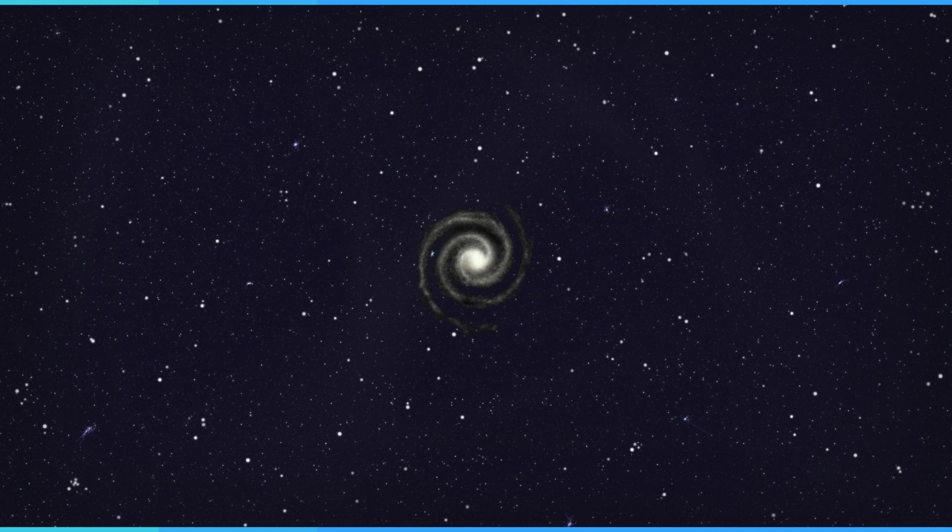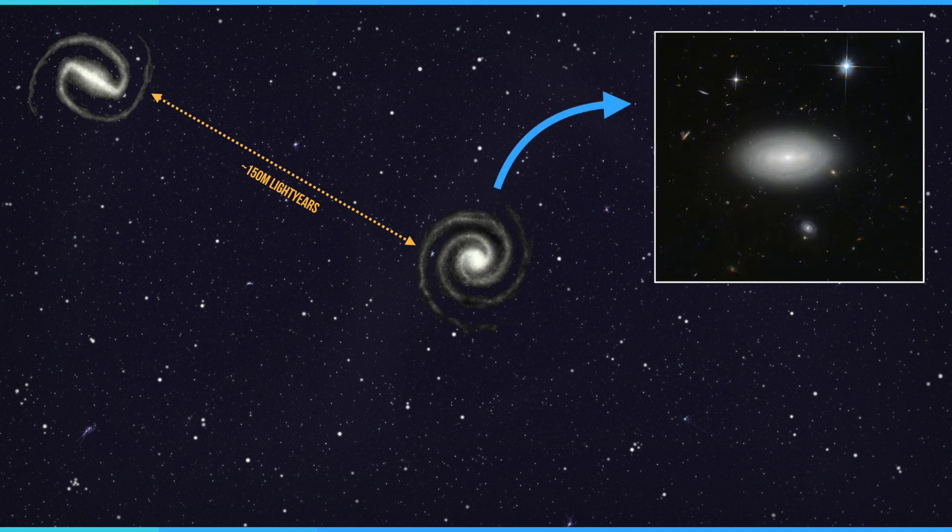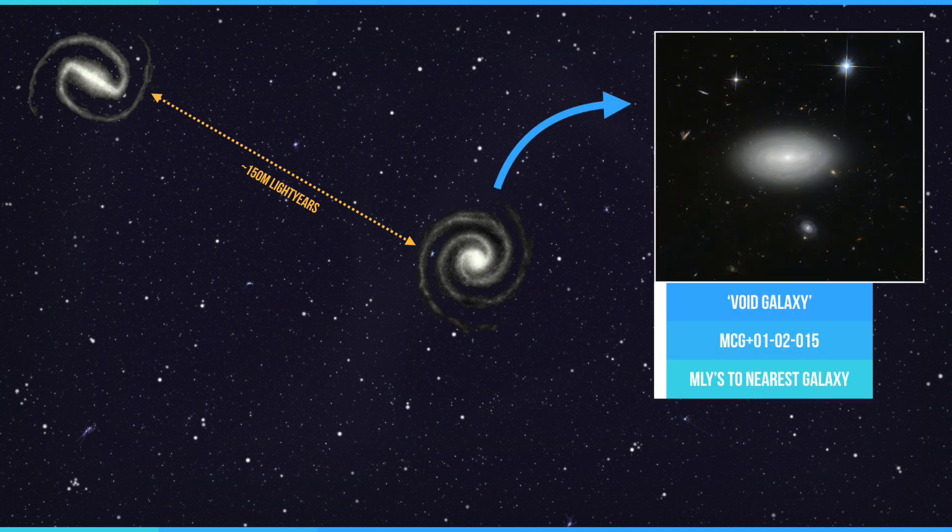It is theorised by many astrophysicists that void galaxies are the result of a large galactic filament being pulled apart by gravity. Galaxies just like this one have been left behind to live out their life alone.